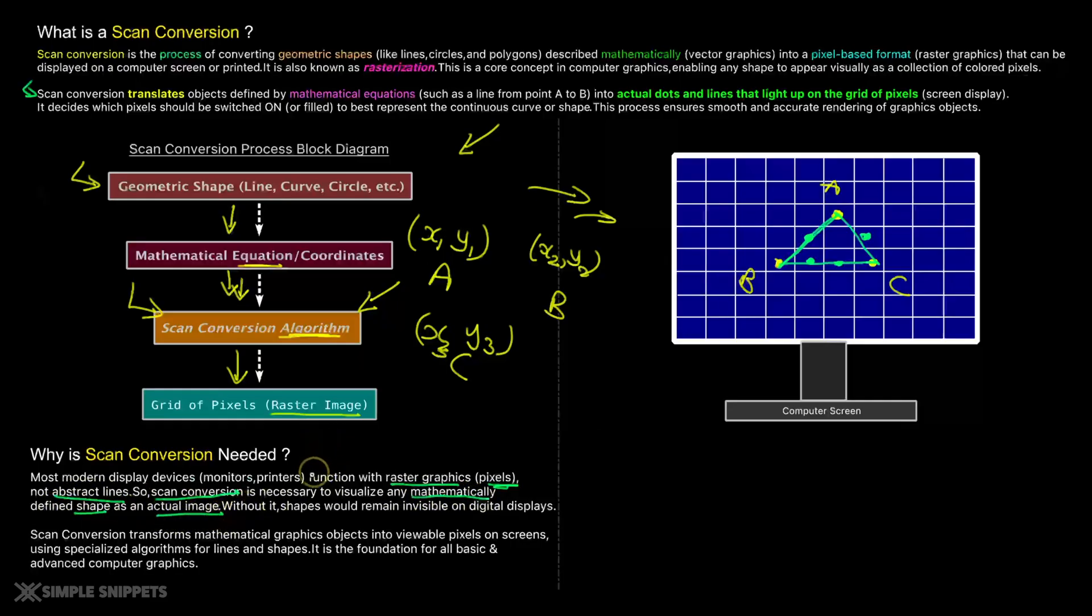And scan conversion is necessary to visualize any mathematical defined shape as an actual image on the screen. So without scan conversion, the shapes will not be appearing on your screen altogether. And that is why you need this scan conversion process. So scan conversion essentially transforms, as I said, mathematical graphical objects into viewable pixels on the screen. So it uses certain specialized algorithms for lines, shapes,